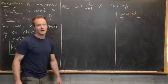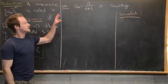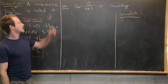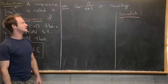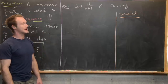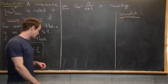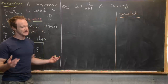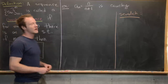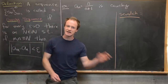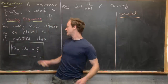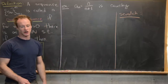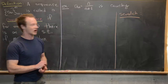I want to do a couple of examples first showing sequences are Cauchy. We'll let a_n be the sequence n over n+1 and we're going to show that this is Cauchy using our standard method where we work with the inequality until we get some idea for what capital N should be. So we're starting with scratch work.